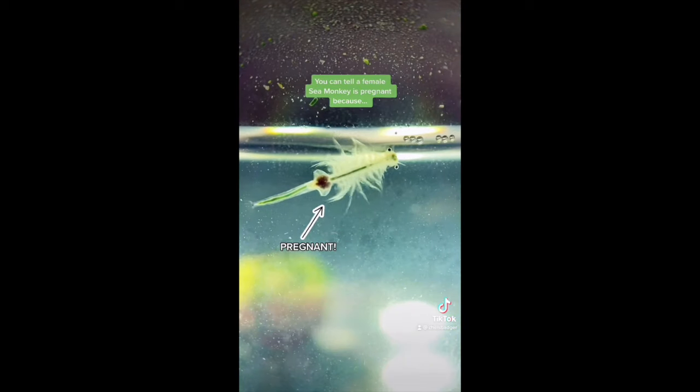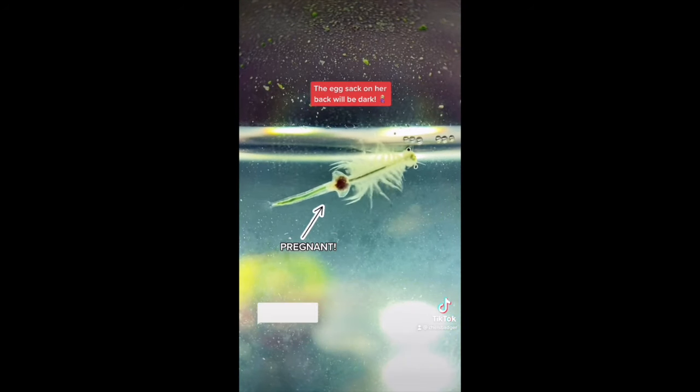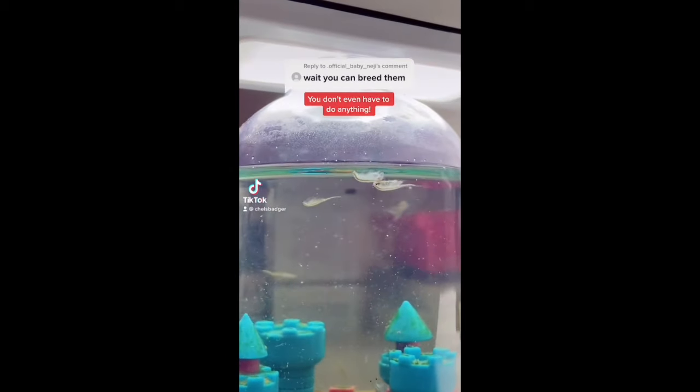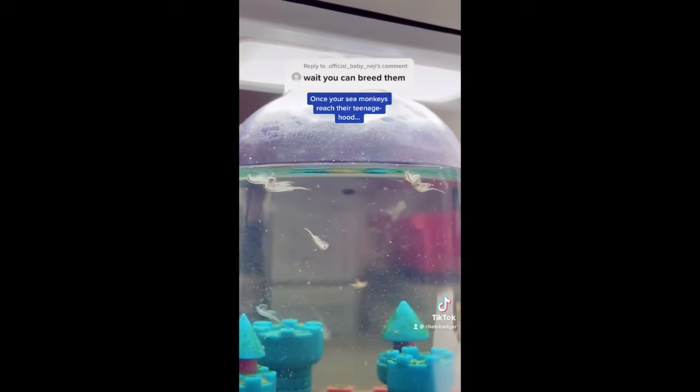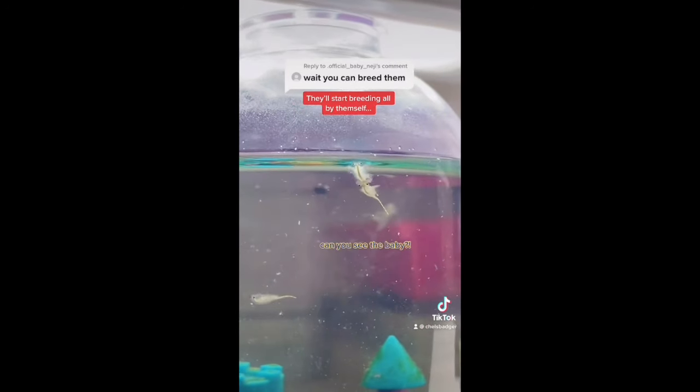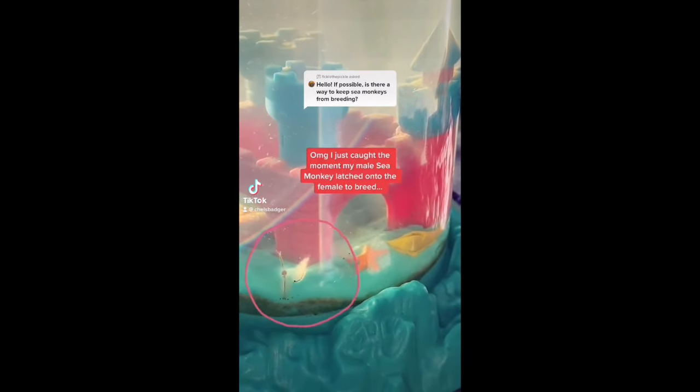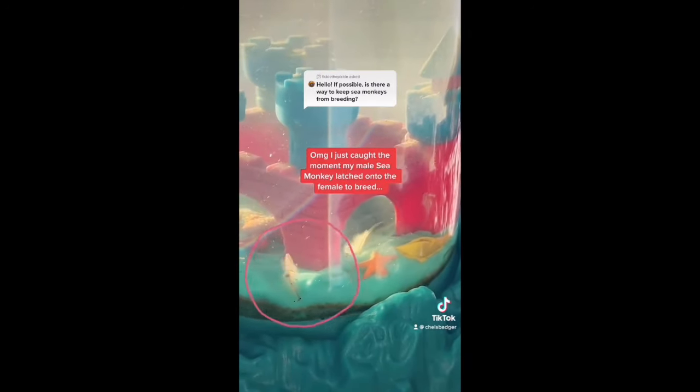Yes, you can absolutely breed your sea monkeys and the best part is you don't even have to do anything. Once your sea monkeys reach their teenagehood they'll start breeding all by themselves and once they start it's pretty hard to stop them. OMG I just caught the moment my male sea monkey latched onto the female to breed. They are real animals so you can't stop them from breeding.